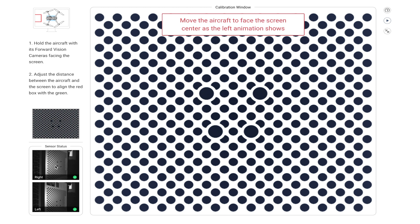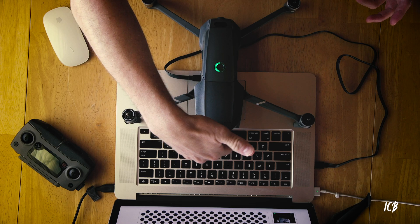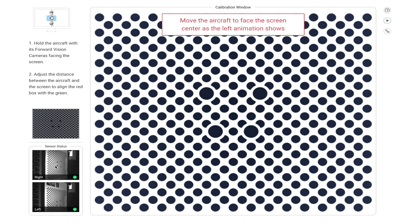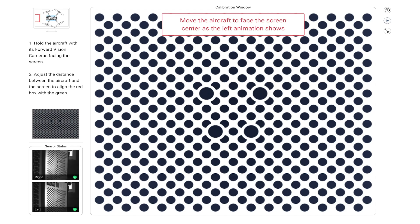That takes you to a large page with a bunch of circles that looks like a QR code, along with a diagram and instructions. What you're actually seeing is your sensor cameras — you're looking through the eyes of the drone. There's also a big red box on the side; that's where you'll get all your alerts if you're not doing something correctly. Don't worry — just correct it and everything will be fine.